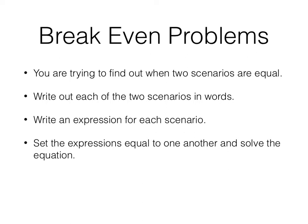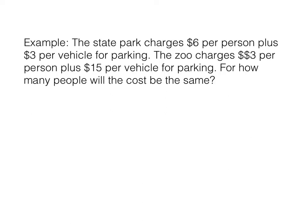Let's try an example. The state park charges $6 per person plus $3 per vehicle for parking. The zoo charges $3 per person plus $15 per vehicle for parking. For how many people will the cost be the same?